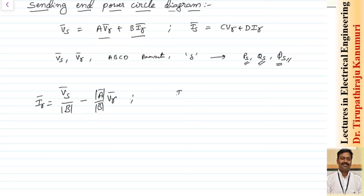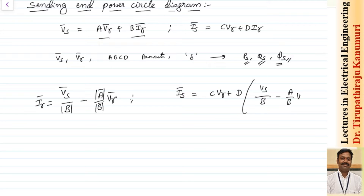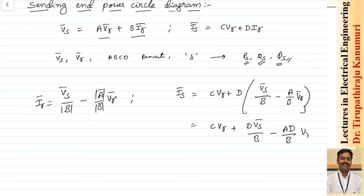We substitute this expression for Ir into the sending end current equation, because we want to write the sending end current in terms of voltages. So Is = C·Vr + D·Ir, and substituting gives Is = C·Vr + D·(Vs/B − (A/B)·Vr). Expanding this becomes C·Vr + D·Vs/B − AD/B·Vr. Remember these are vectors.